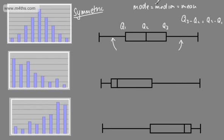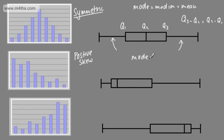So we can either look at the measure of location, the quartiles, or a graphical representation. If we consider the positively skewed distribution, we can say this has positive skew. We can see lots of the data observations are bunched up to the left. In terms of the measures of location, the mode is going to be less than the median, which in turn will be less than the mean.